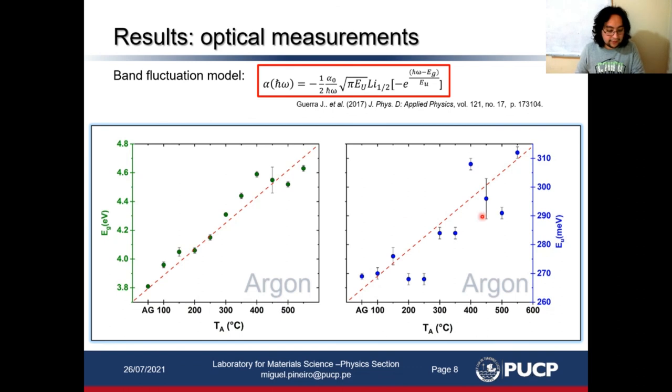In the right figure, we can also confirm that the Urbach energy is increasing with annealing temperature. So we may expect the defects are increasing, since the Urbach energy indicates the disorder degree. The lines are a guide to the eye.